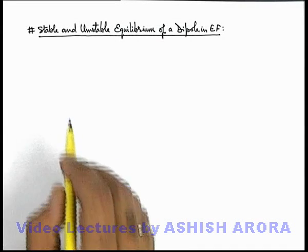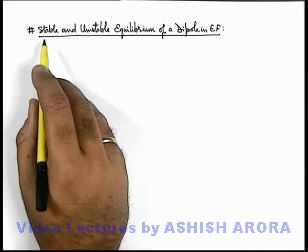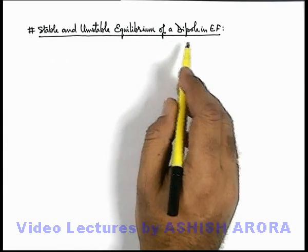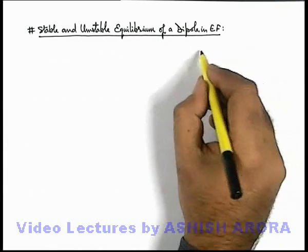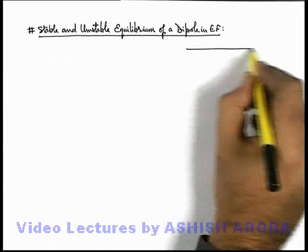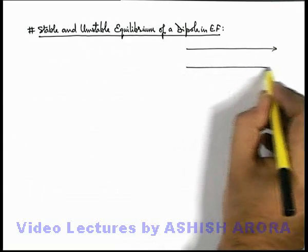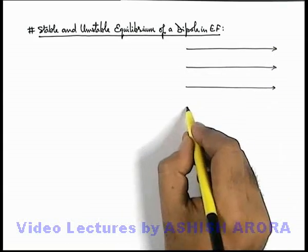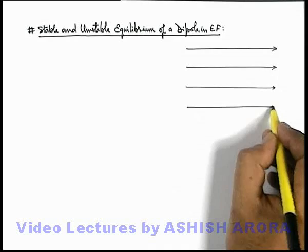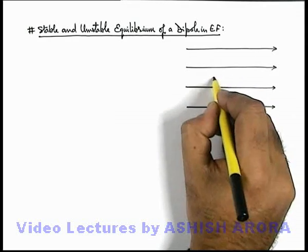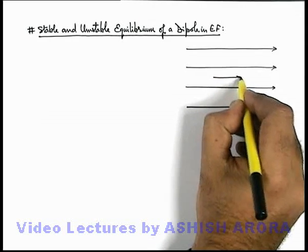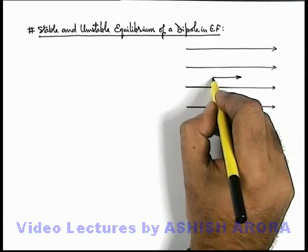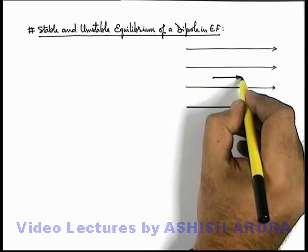Let's discuss an important concept of stable and unstable equilibrium of a dipole in an electric field. A dipole is placed in a uniform electric field in such a way that its direction is oriented along the direction of the electric field. Say this is a dipole with a dipole moment p.